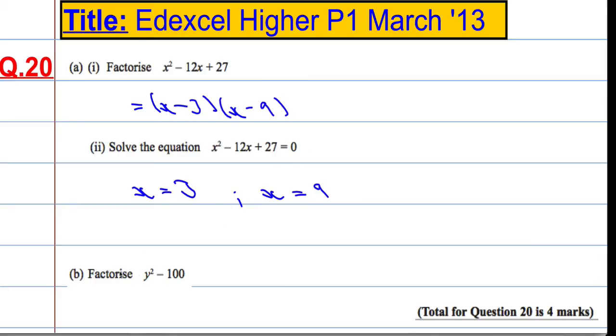And then the second part, factorize y squared minus 100. That's a square number, and that's a square number, and there's a difference. So it's the difference of two squares.